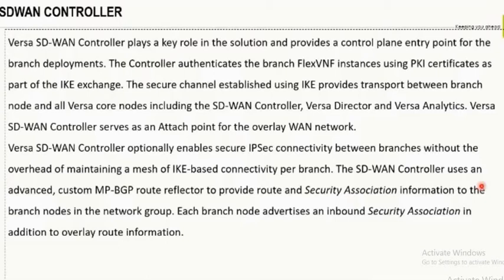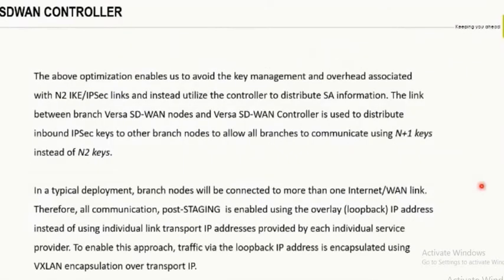On top of that IPsec SA, we build MP-IBGP. That's how the controller gets to know what the branch is, how many links are available on the branch — for example, one MPLS link and one internet link — and how to reach the branch using those subnets. All that information is captured in the initial site discovery process. The SD-WAN controller intelligently identifies the branch name, the number of WAN links, whether it's behind NAT, or whether it has a static IP.